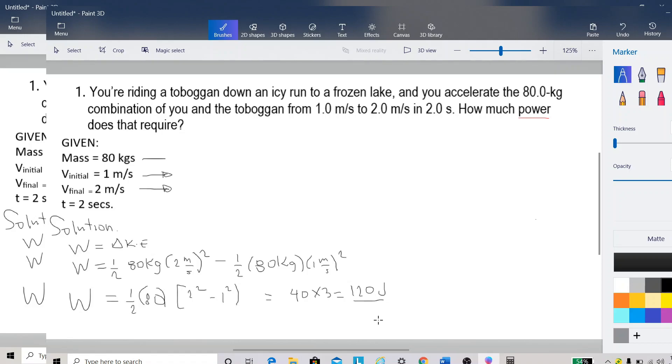So that will be in joules. And if we're going to solve for the power, power is simply W over t, and W is equal to 120 joule per two seconds, and the answer will be 60 watts. So here is our final answer for number one.